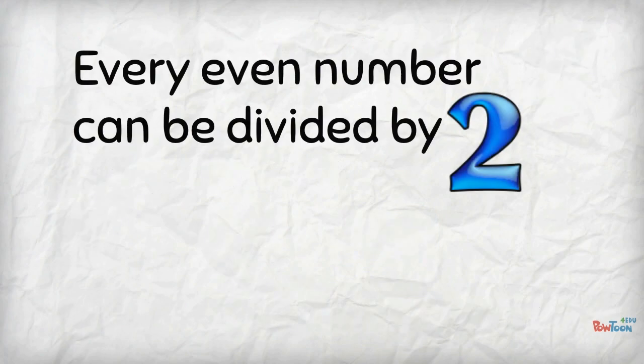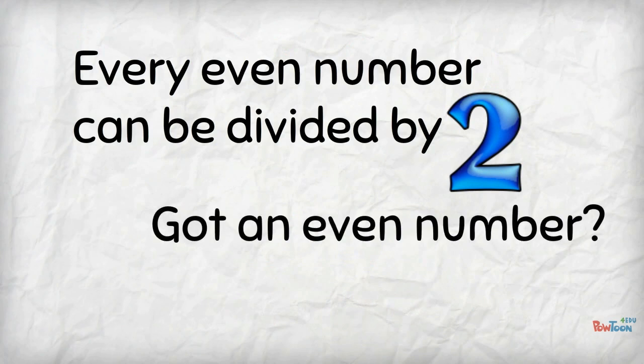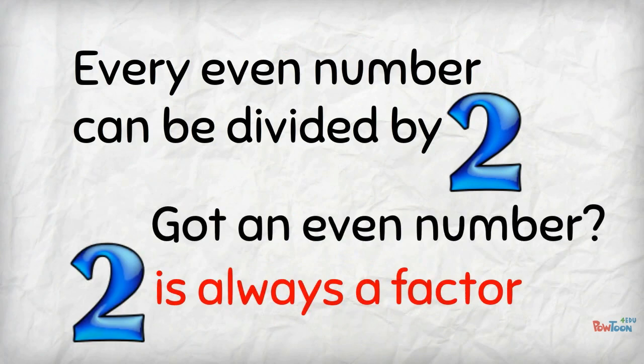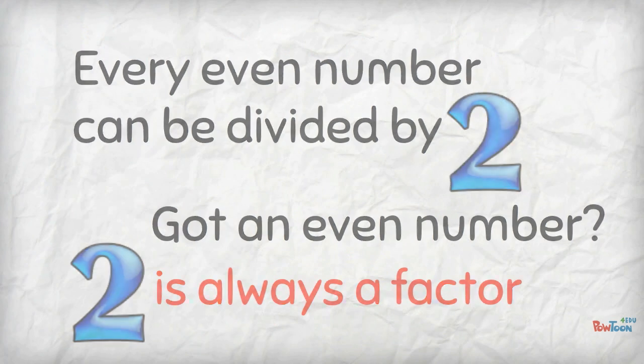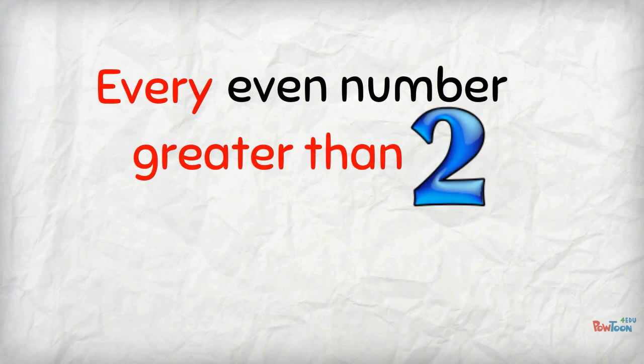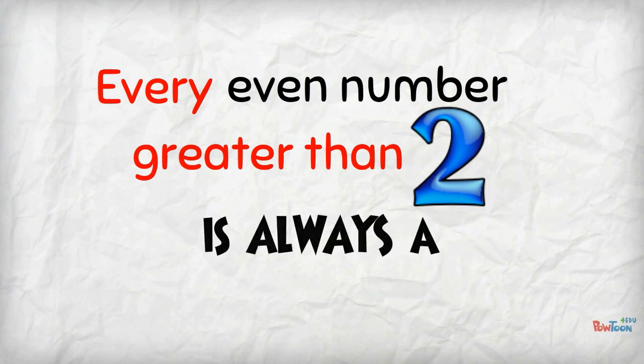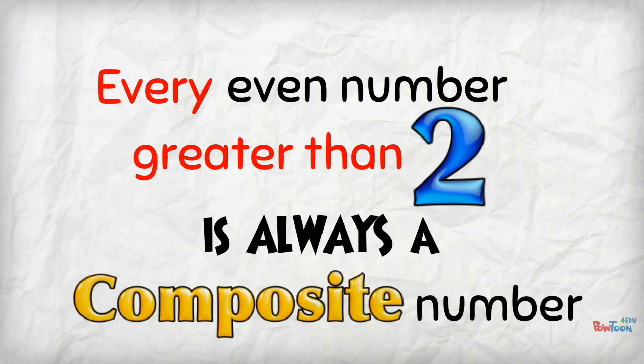Every even number can be divided by 2. So anytime you are given an even number, you can always say that 2 is going to be one of the factors. And that means every even number higher than 2 is always a composite number.